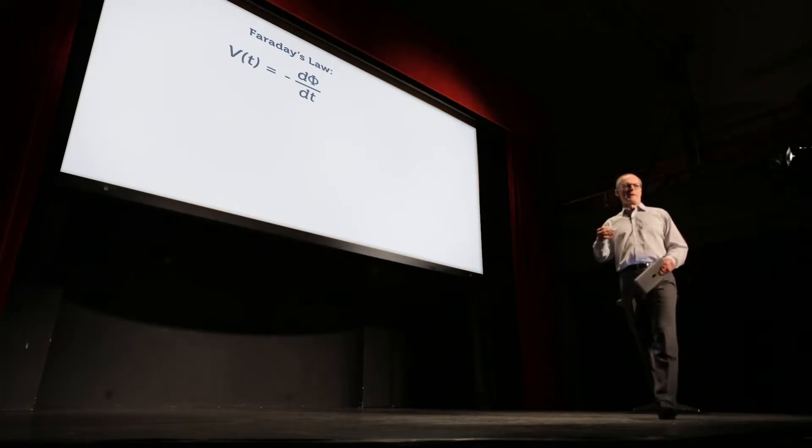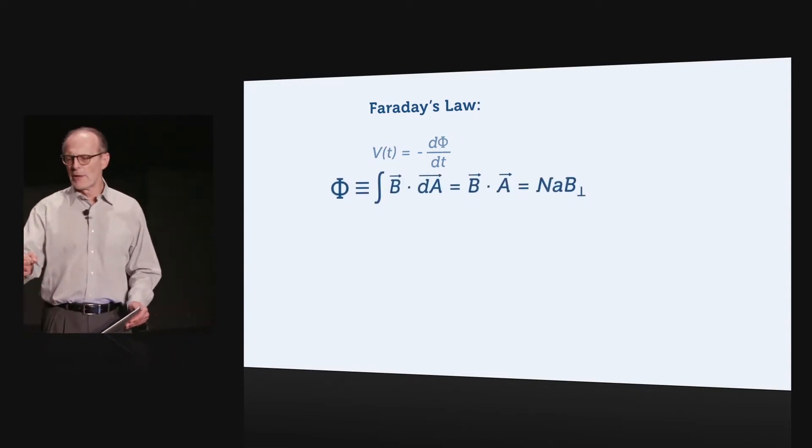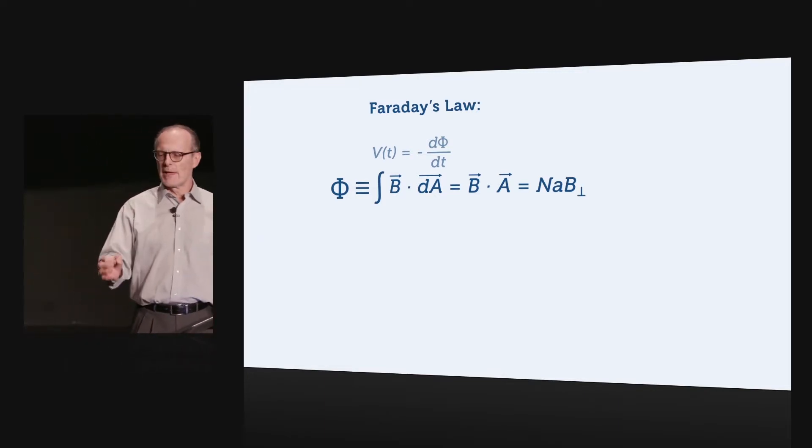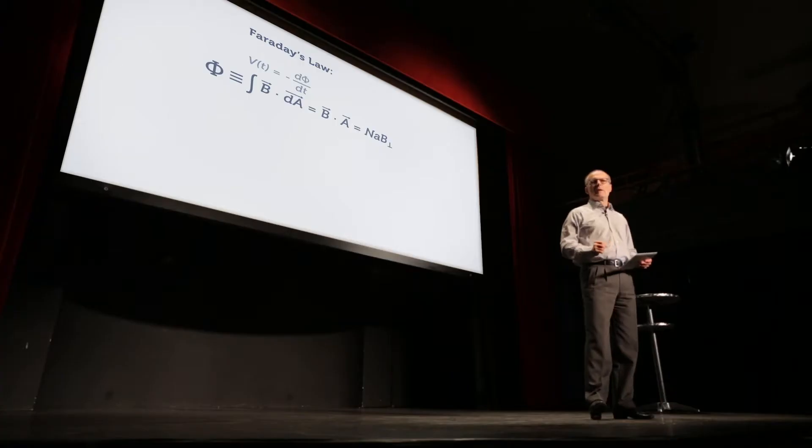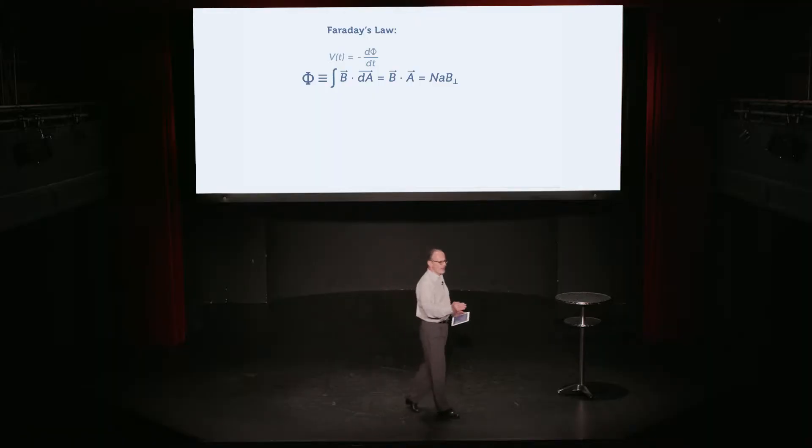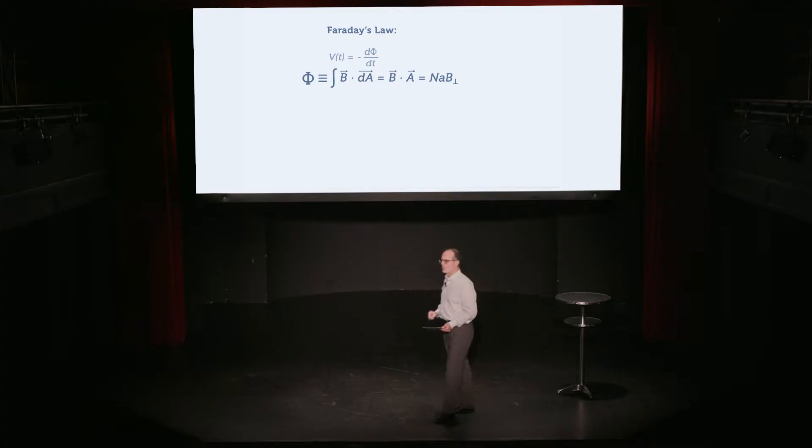Now, the flux, by definition, is the integral of the flux density over the area of the coil. And if the coil just consists of n turns of an area that we're calling small a, then the total area is simply n times a. And if the flux density is constant across that area, then the total flux in the coil is simply n times a times the perpendicular component of the flux density, which I called B perpendicular.